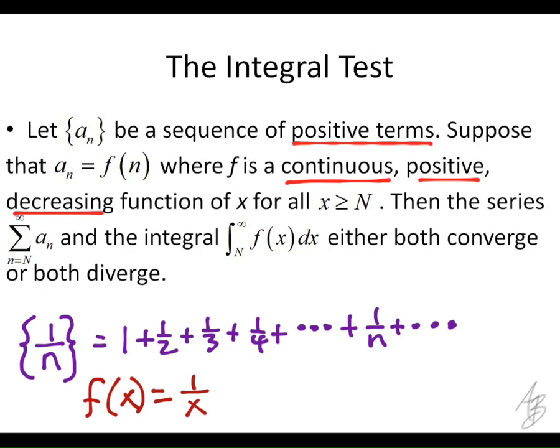And so if I put in any x value, any integer for x, let's say I put in 3 for x, I'm going to get the third term, which is 1 third. If I put in 4 for x, I'm going to get 1 fourth, which is the fourth term. So this function matches up with this sequence at each of the integers for x. The difference is I can put any number I want in for x here. I can't put a number in like 1 and a half. I can't put 1.5 in for n here because 1.5 is not an integer. I could put 1.5 in here to this function. Does that make sense?